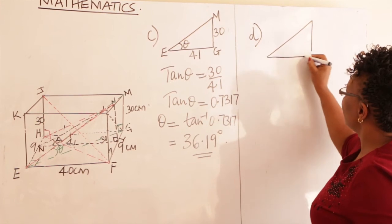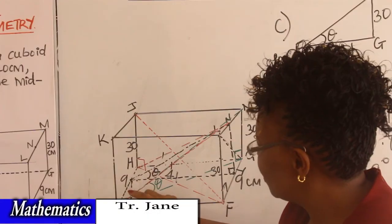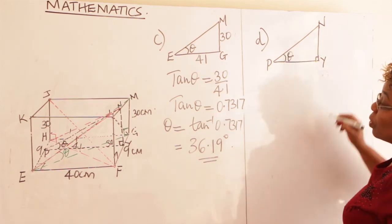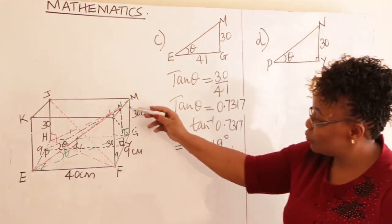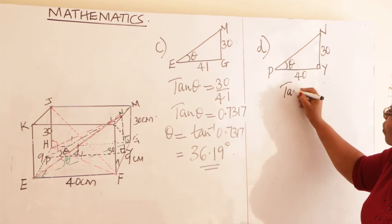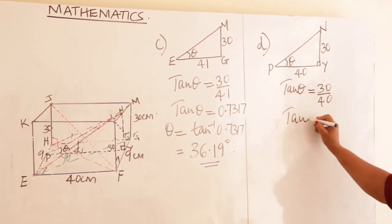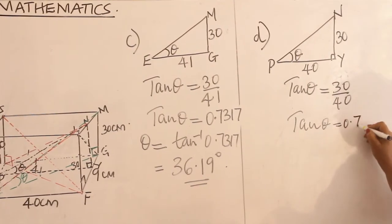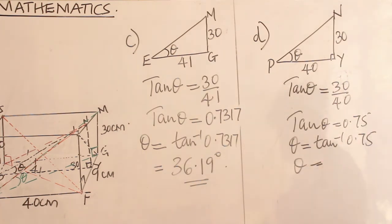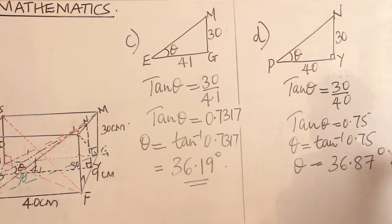We label the extracted triangle with vertices N, O, and P, with Y being the angle we want. The height here is 30 centimeters — the height of the cuboid — and the base length is 40 centimeters. Using tan θ equals opposite over adjacent: tan θ equals 30 over 40, which equals 0.75. Taking tan inverse of 0.75 using the calculator gives the angle as 36.87 degrees.